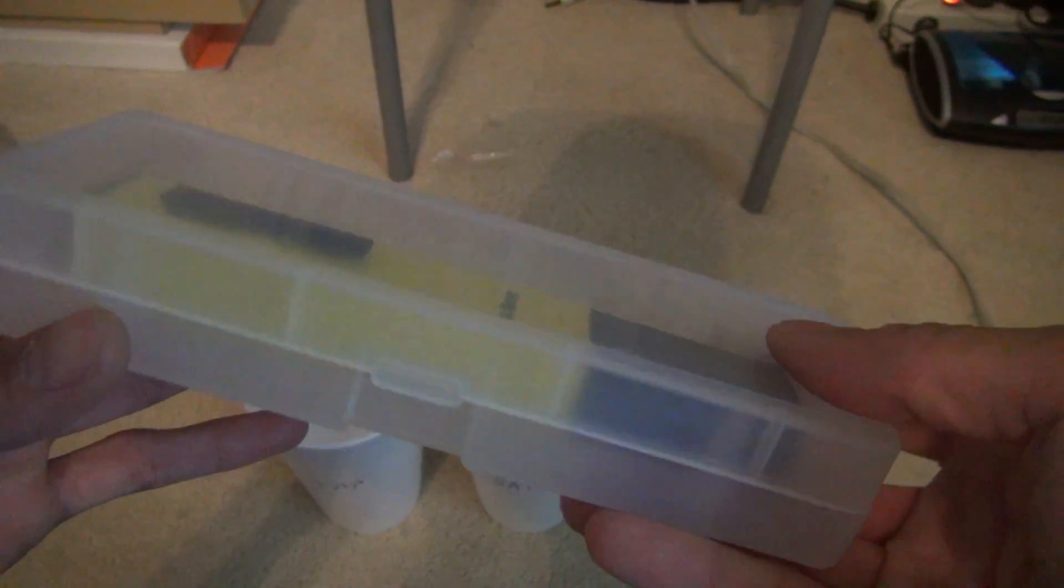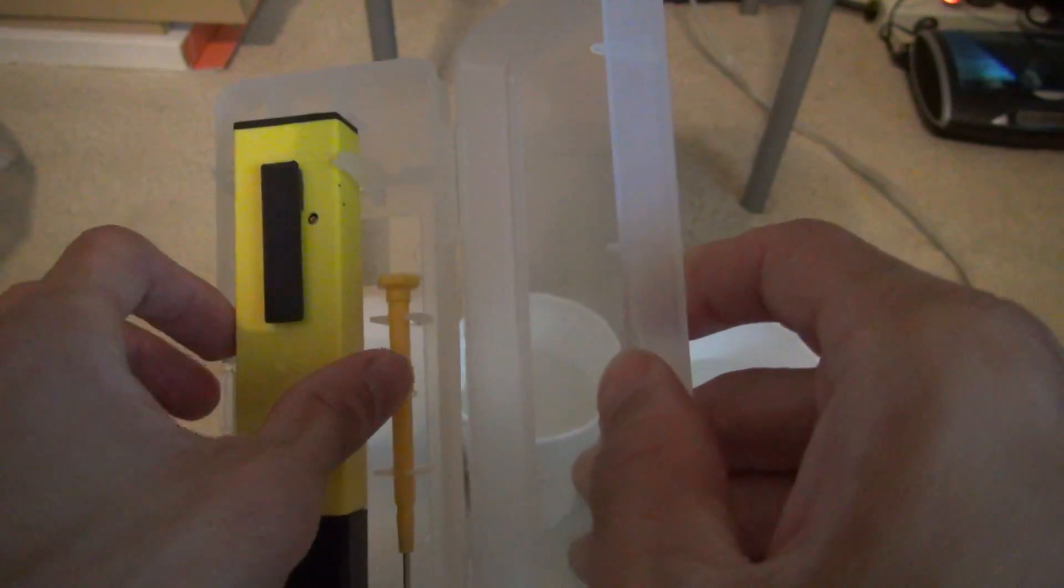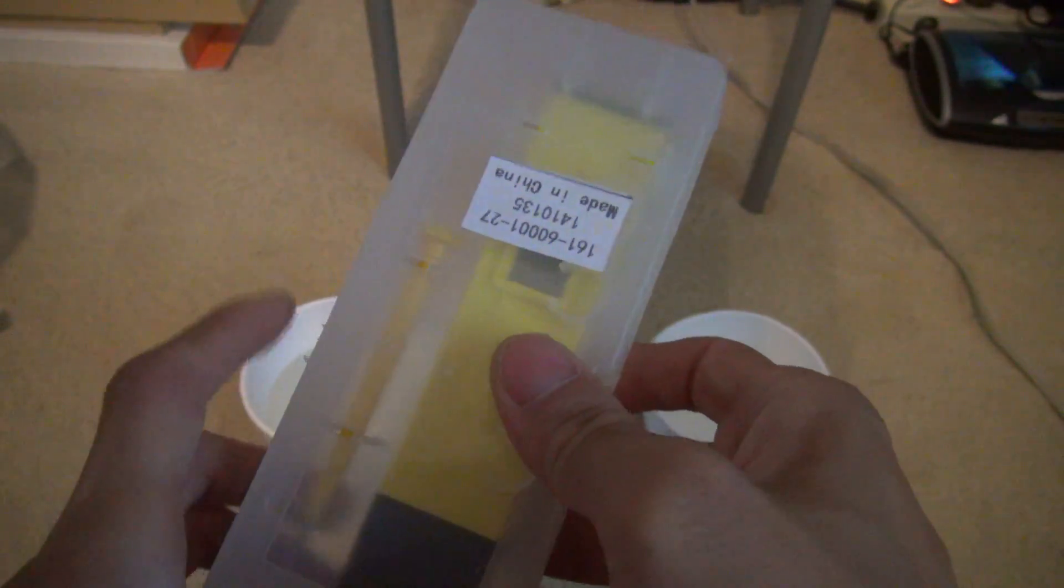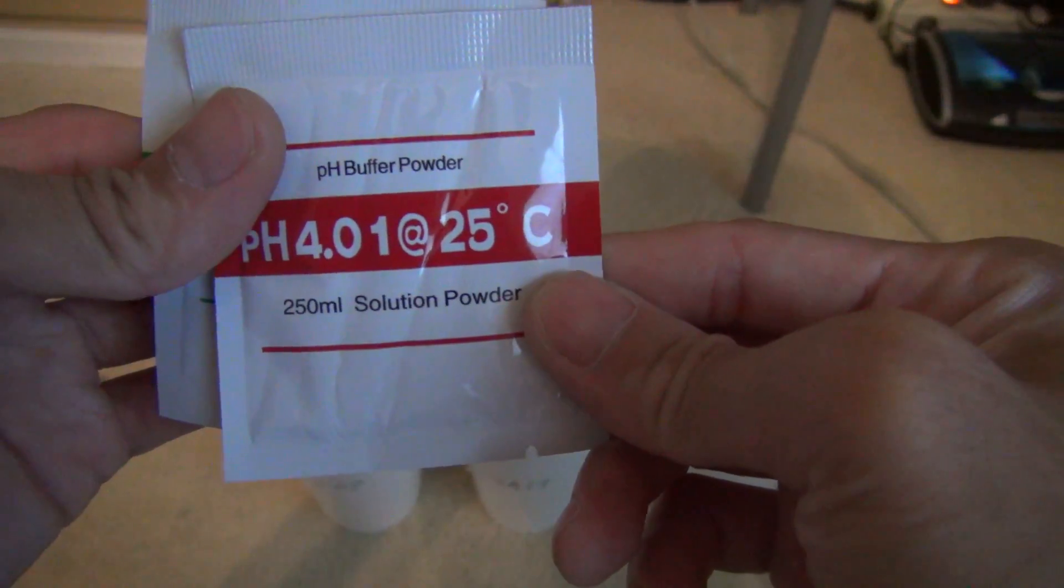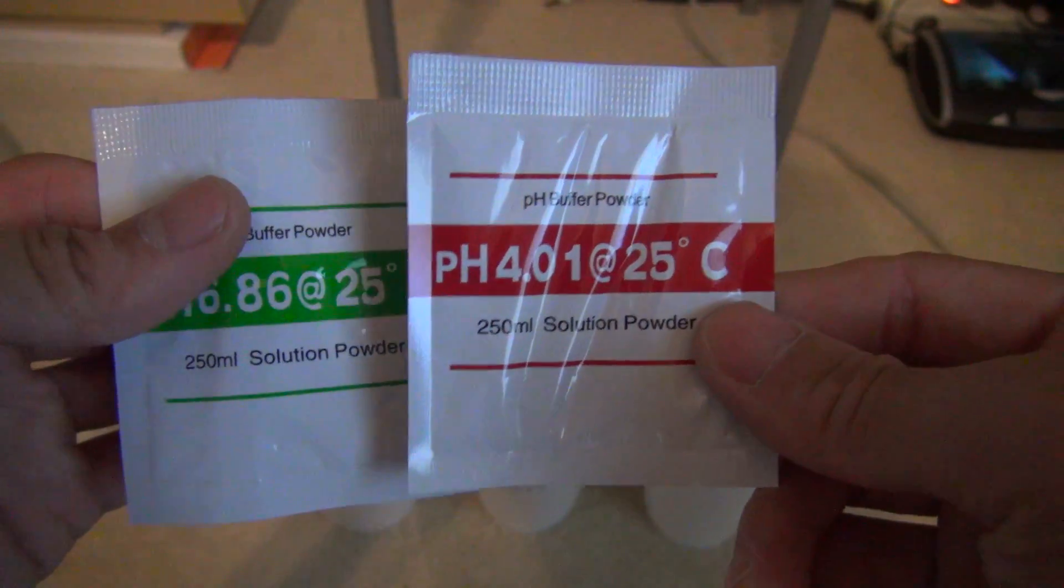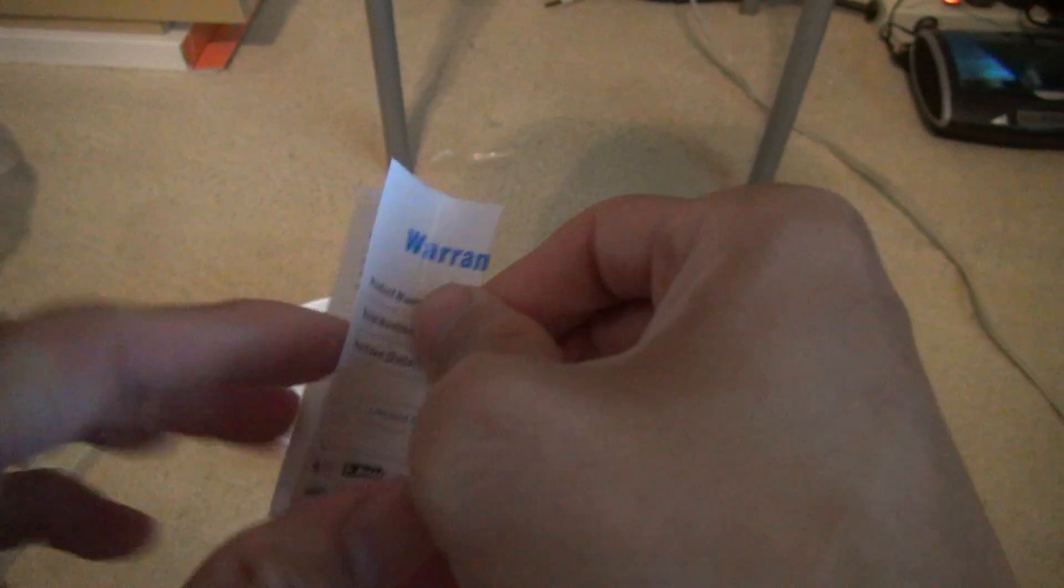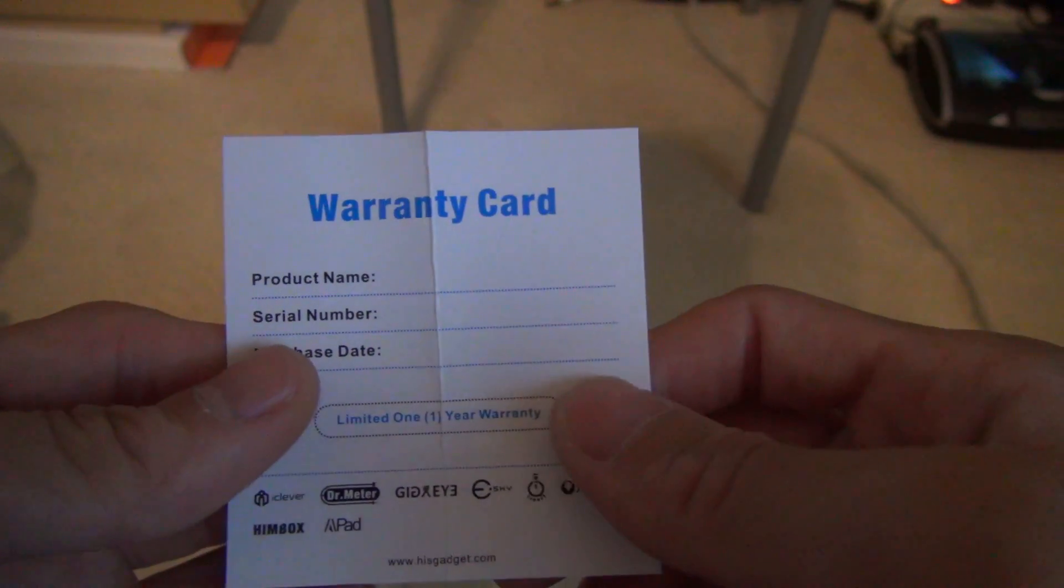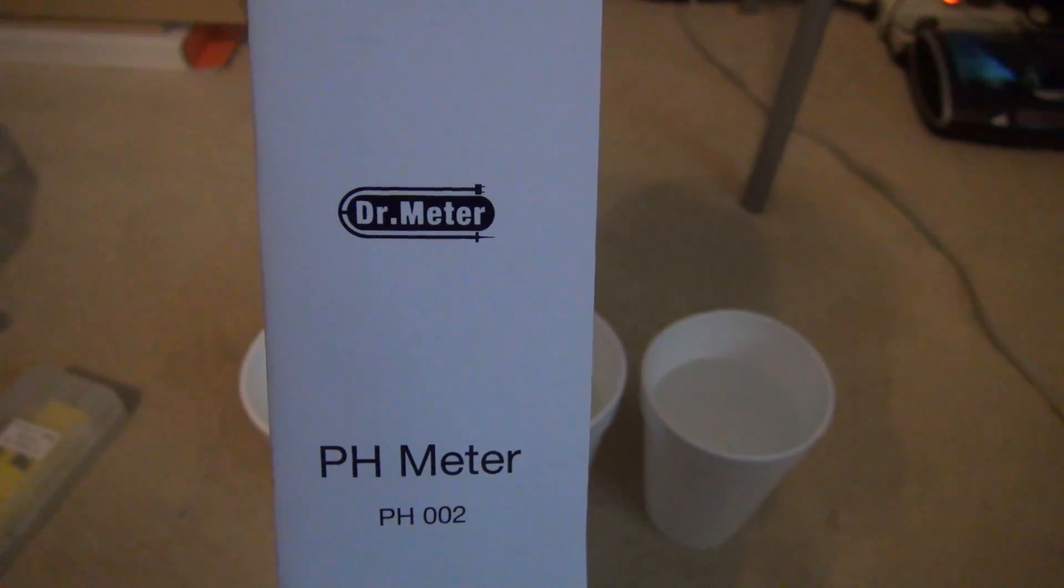In your package content you will get the Dr. Meter with a calibration tool, a carrying case, two solution powders, your warranty card and a user manual.